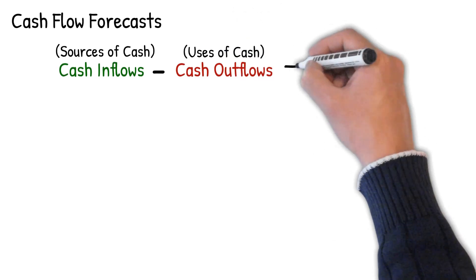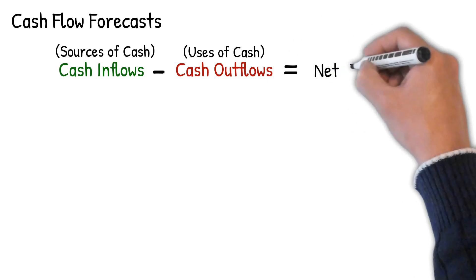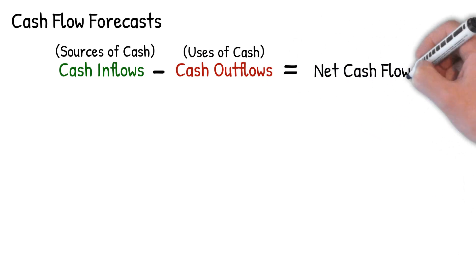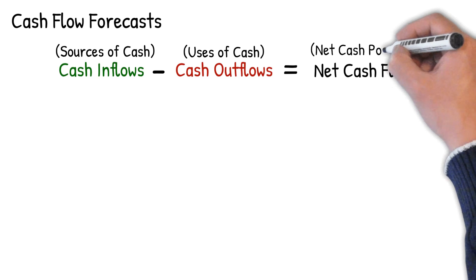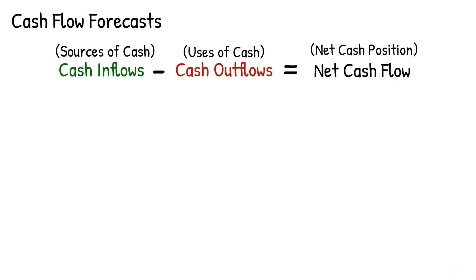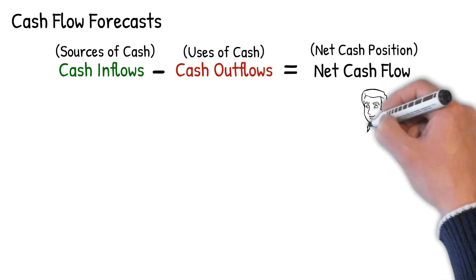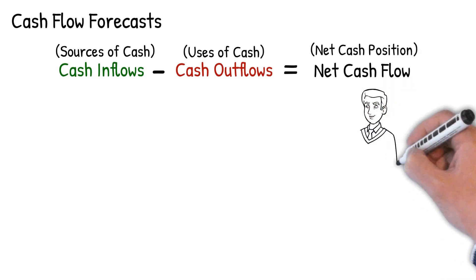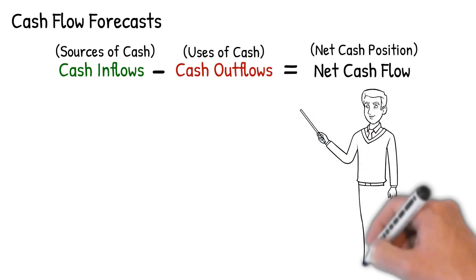When a construction company produces a cash flow forecast, it allows them to calculate their net cash position at that point in time, but vitally helps them to predict what their net cash position will be in the future or over the period of a project. This is very important in the construction industry as there are generally a lot of moving parts to think about.